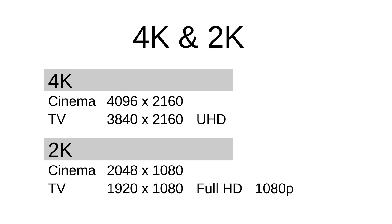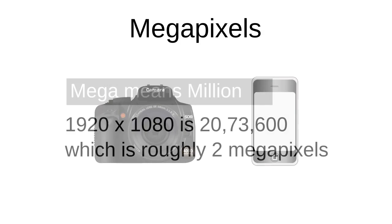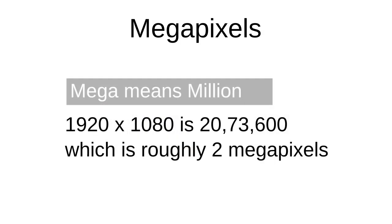Full HD is 1080p. If you look at YouTube, video is often at 1080p. Moving to cameras — the camera uses megapixels. Mega means million. Full HD at 1080p is approximately 2 megapixels.